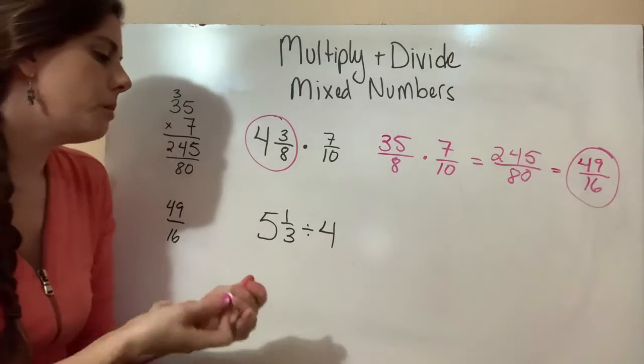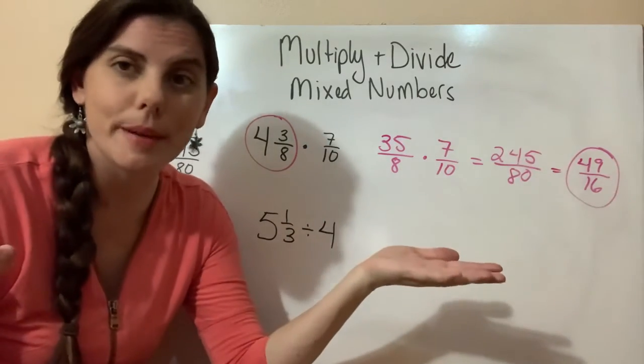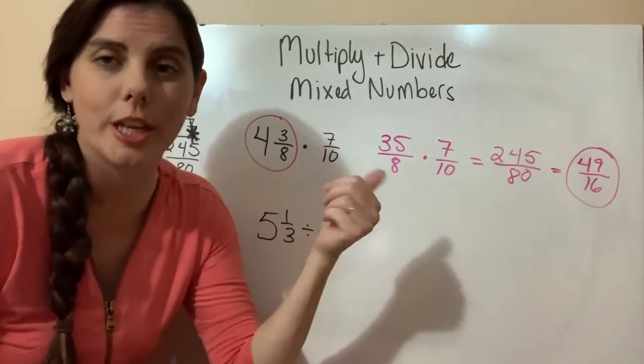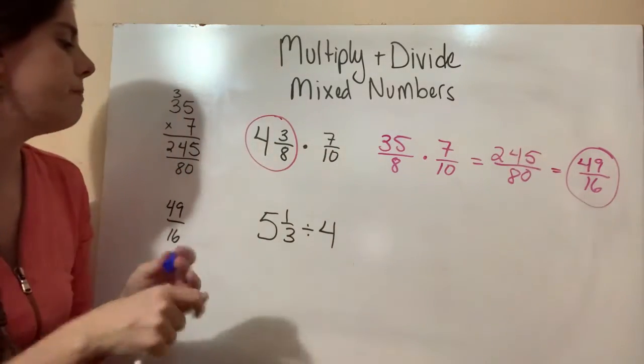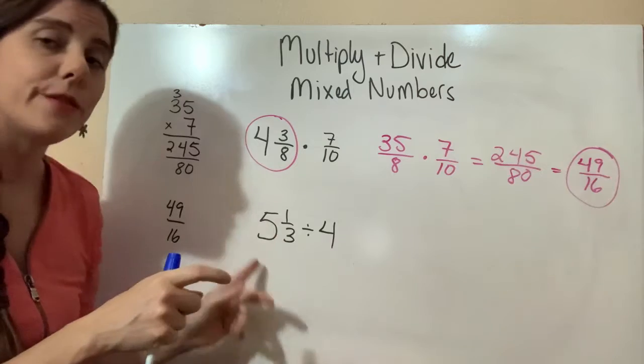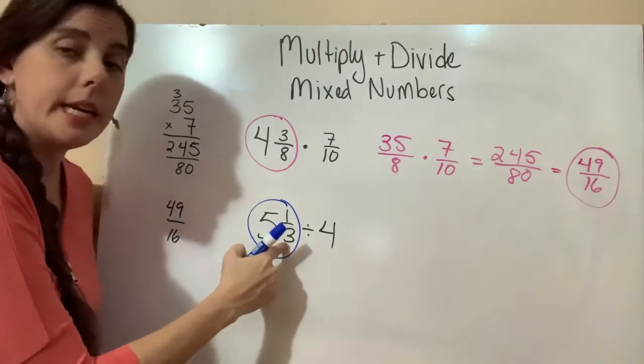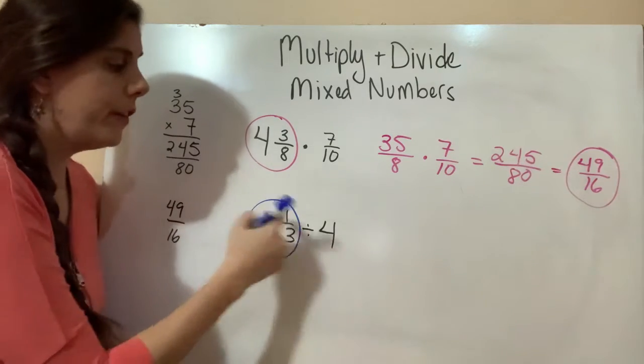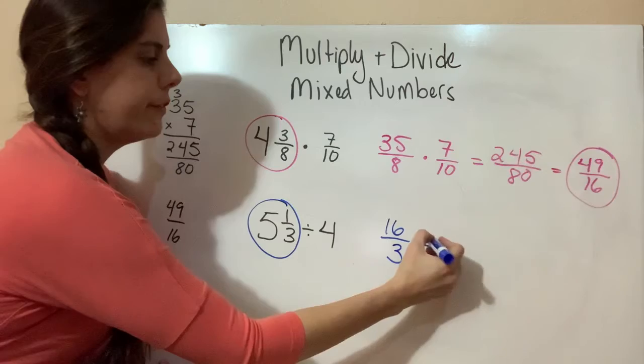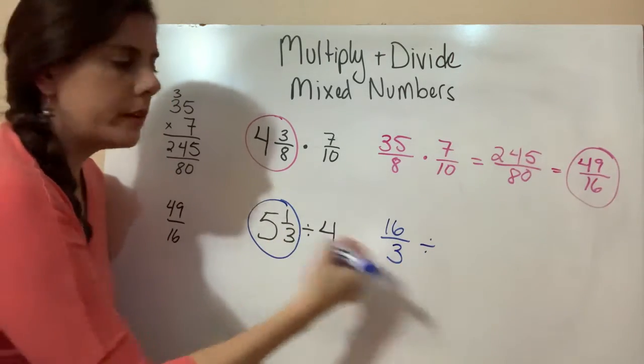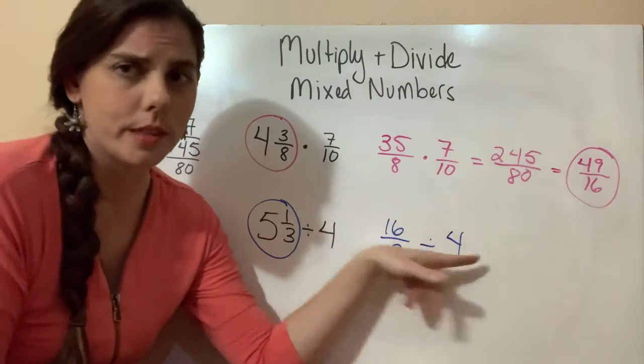The same thing is true when we're dealing with division. Remember, every division problem is basically a multiplication problem. We just have to change the sign and change the last number. So we're going to take this 5 1/3 and turn it into an improper fraction. 3 times 5 is 15, 15 plus 1 is 16, so 16/3 divided by... I'm going to go ahead and put the 4 here, but remember what we have to do with this number.